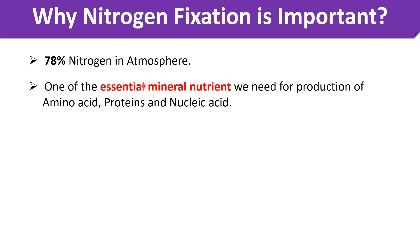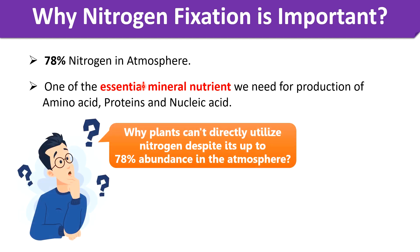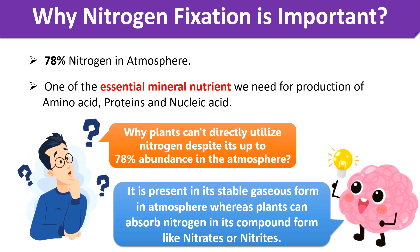Plants and other organisms need nitrogen for their daily cellular activities, but still we cannot use nitrogen directly. It is because the nitrogen present in the environment is in the form of dinitrogen molecules. These dinitrogen molecules have a triple bond, which makes nitrogen act as an inert gas. Inert gases are those gases which are stable and non-reactive.